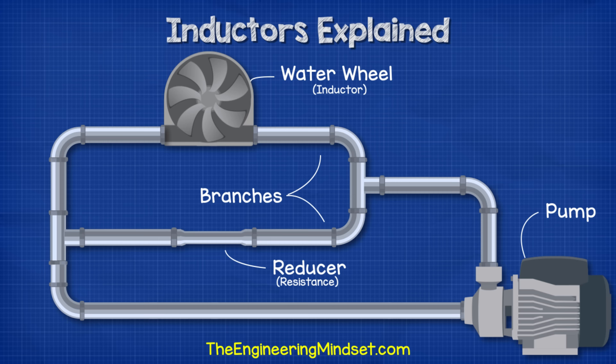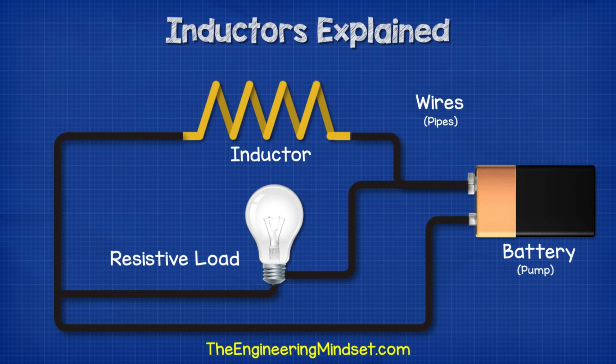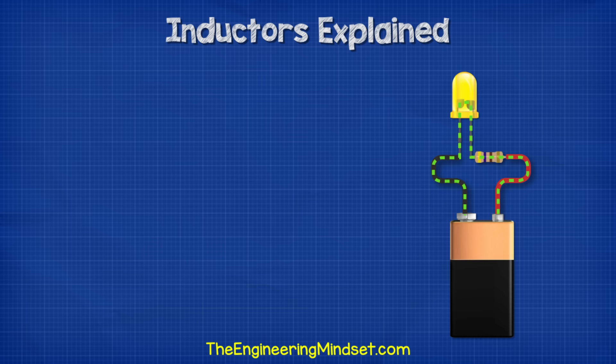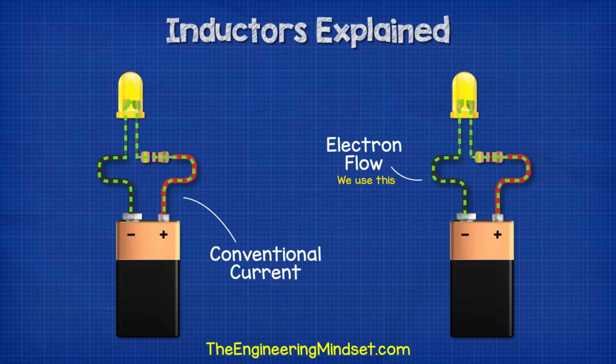The other branch has a water wheel built into it. The water wheel can rotate, and the water flowing through it will cause it to rotate. The wheel is very heavy though, so it takes some time to get it up to speed and the water has to keep pushing against this to get it to move. This water wheel is going to be equivalent to our inductor. When we first start the pump, the water is going to flow and it wants to get back to the pump as this is a closed loop.